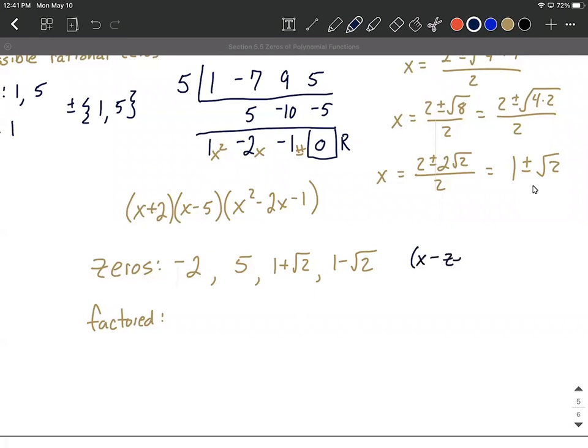And finally, to list out all the factored form here, what you want to remember is it always goes as x minus whatever you have as a 0 is going to make a factor. Okay. So negative 2 goes along with x plus 2. x minus a negative 2 makes x plus 2. 5 was a 0, so x minus 5 is a factor. Here's where things get a little bit trickier, but they aren't that bad. It's always, sorry,